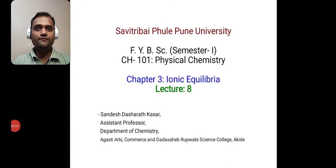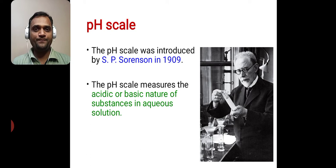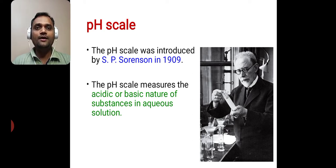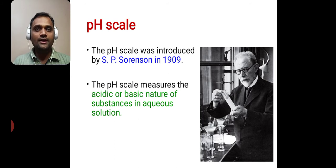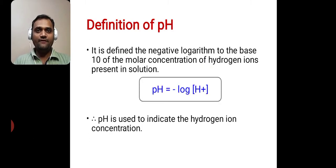Welcome to the 8th lecture of the chapter Ionic Equilibria. Today we are going to study a simple but interesting point: the pH scale. The pH scale was introduced by S.P. Sorensen in 1909, and we know that the pH scale measures the acidic or basic nature of substances in aqueous solution. Whether that solution is acidic, basic, or neutral is determined by using the pH scale. Let us start with the definition of pH.